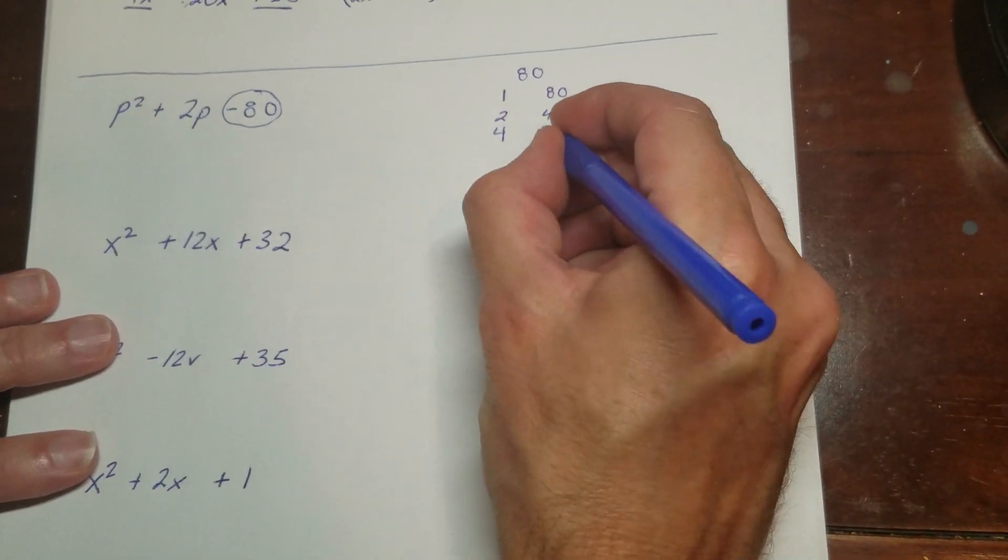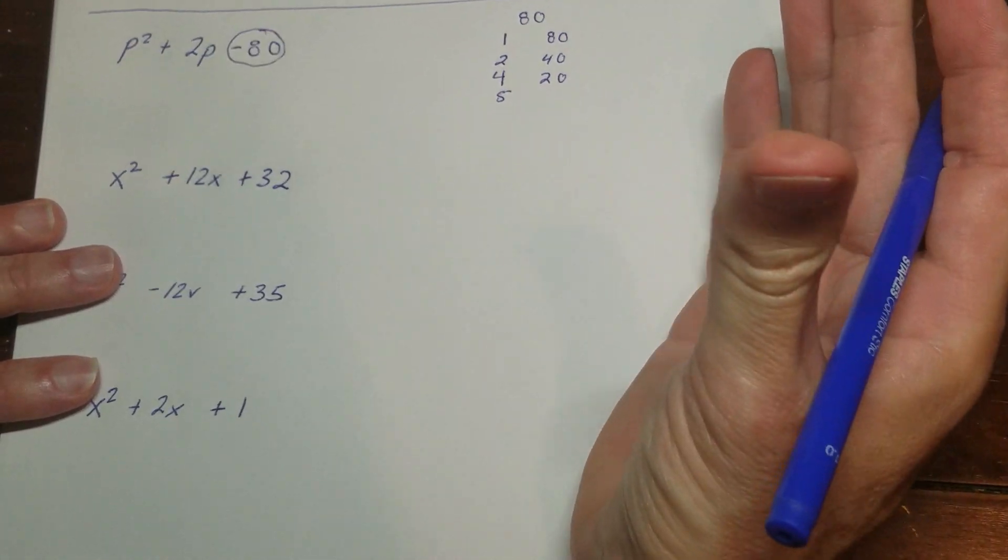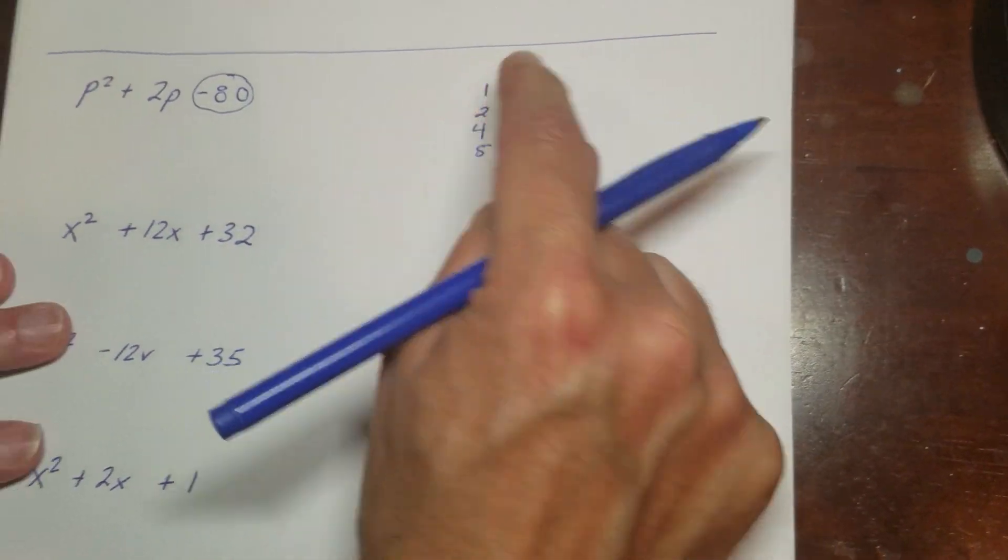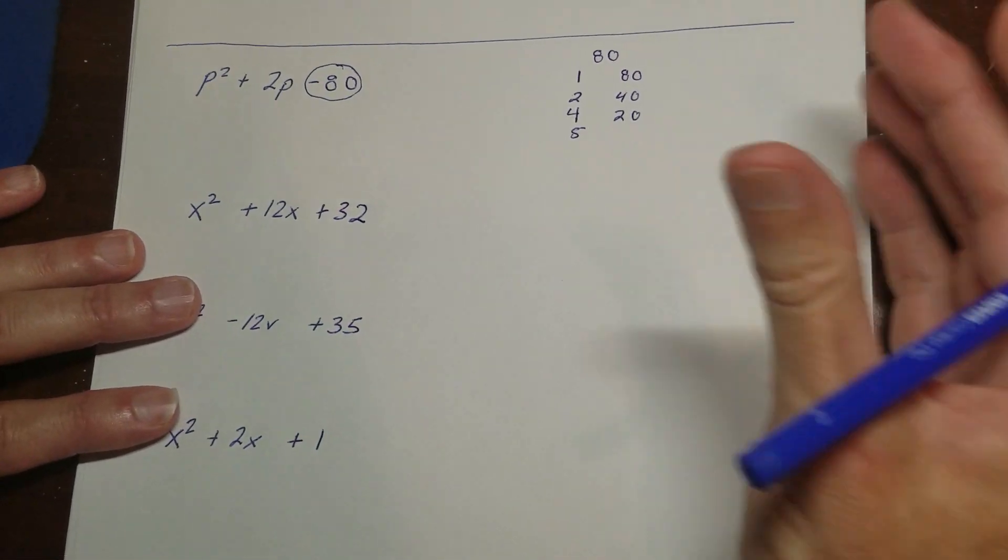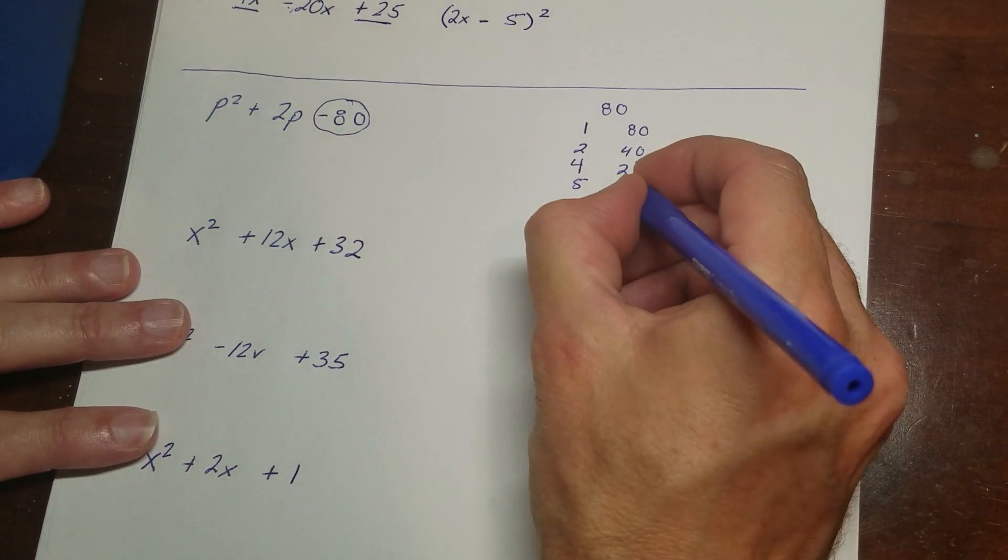Does 4 go into 80? Yes, 20 times. Does 5 go into 80? Yeah, it does. A lot of times I'll ask people, okay, 5 goes into 80. You know 5 goes into 80 because it ends with a 0. But then I'll say how many times, and then they're stuck. So if you want, you can always use a calculator when you do this. But I know that 5 goes into 80 16 times.